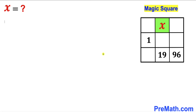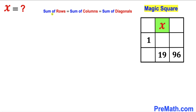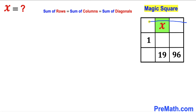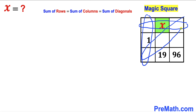Let's get started with the solution. Let's go over the magic square. In a magic square, the sum of row values equals the sum of column values, which equals the sum of diagonal values. In other words, the sum of the values in this row must be equal to the sum of the values in this column, and likewise equal to this diagonal as well.